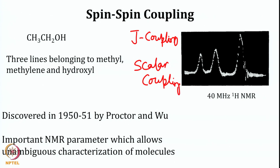We had looked at the first chemical shift spectra recorded on ethyl alcohol at 40 megahertz, and it gave three lines. The first line corresponds to CH3 methyl protons, then methylene protons, and then OH protons. The height of each of these peaks was in ratio 3 to 2 to 1. This was the first spectrum recorded by Dharmati and co-workers, and that actually opened the avenue of NMR in chemistry.